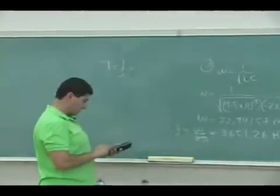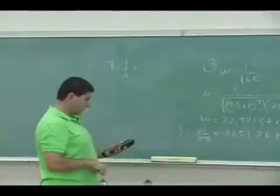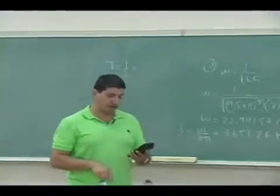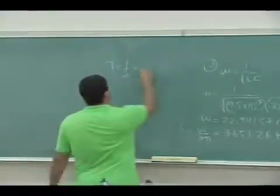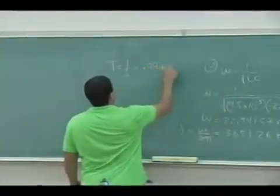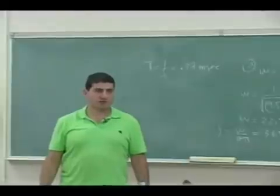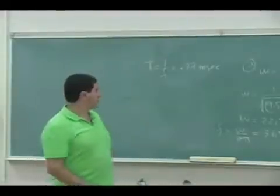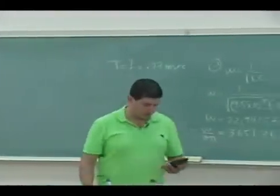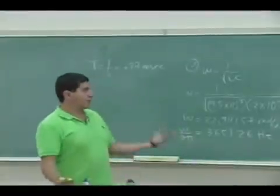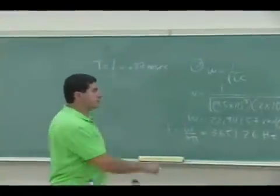The period is one over the frequency, so that's about 0.27 milliseconds. So the period of the cycle is 0.27 milliseconds roughly. That's part A.